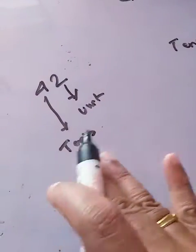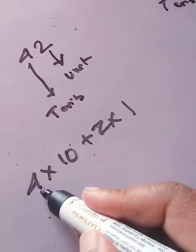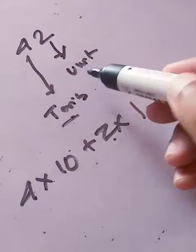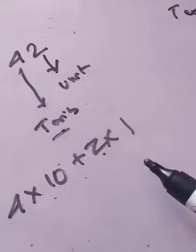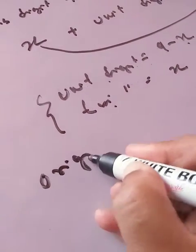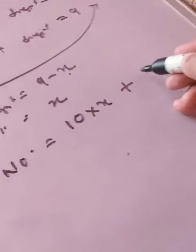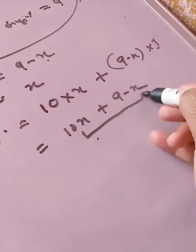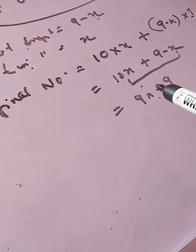Now suppose we expand the number 42: it becomes 4 into 10 plus 2 into 1, because 4 is in the tens place and 2 is in the units place. Similarly, with our variables, x is the tens digit so it is multiplied by 10, and the unit digit 9 minus x is multiplied by 1. So the original number is 10x plus (9 minus x), which gives 9x plus 9.